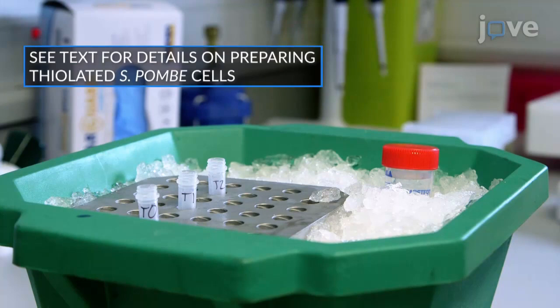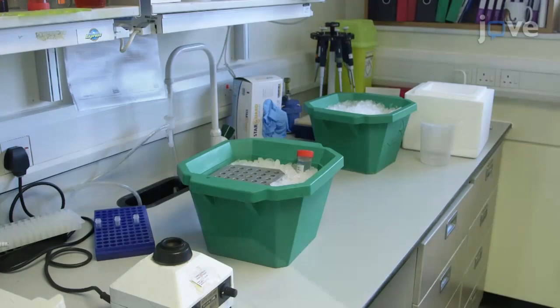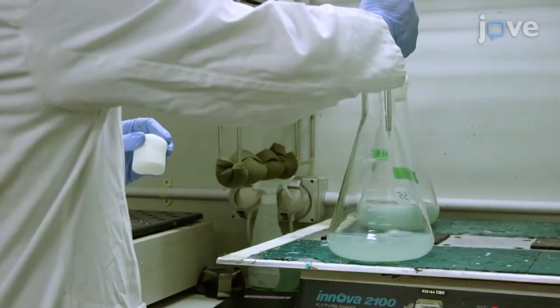If an S. pombe spike is to be added to the culture, place an aliquot of thiolated S. pombe cells on ice to thaw. Vortex the thawed aliquot and add it to the culture.